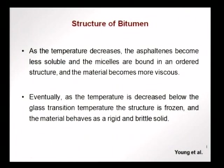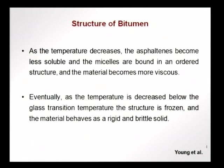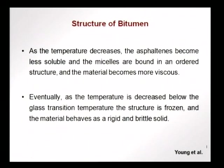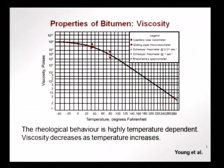When temperature decreases, the asphaltenes become less soluble — they are more bound in an ordered structure and the material becomes more viscous, with a higher coefficient of viscosity, so it does not flow as easily. When the temperature decreases even further and goes below the glass transition temperature, the structure is frozen and the material behaves more like a rigid brittle solid. This is similar to what we saw in the case of polymers, where the material changes from liquid-like behaviour to solid behaviour below the glass transition temperature.